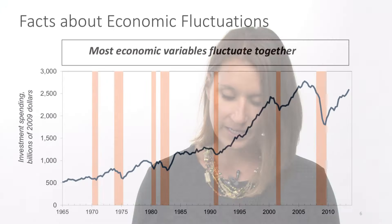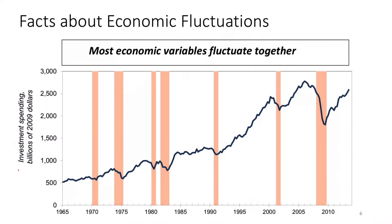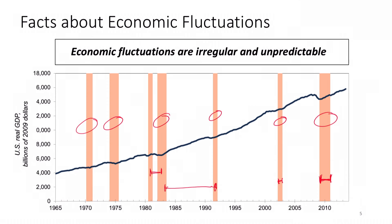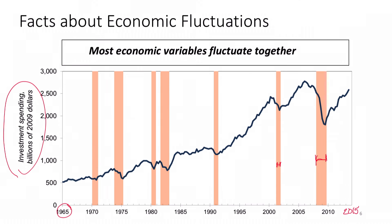Most of our economic variables fluctuate together. Here you can see investment spending in the United States during recessionary periods from about 1965 to 2015. During those recessionary periods, not only does output fall, but investment spending is falling too. So our variables that are part of our output equation — consumption, investment spending, government spending, and net exports — do tend to fluctuate together during economic fluctuations.